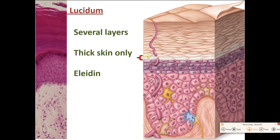Next is the stratum lucidum, found only in thick skin. It contains a protein called elidin, which is basically a precursor that will become keratin. Elidin is a clear protein, which is why this layer appears clear — lucidum means clear, like being lucid means clear of thought. Interestingly, there is a lot of elidin in the epidermis of your lips, which is why the underlying blood imparts a reddish color to the lips.